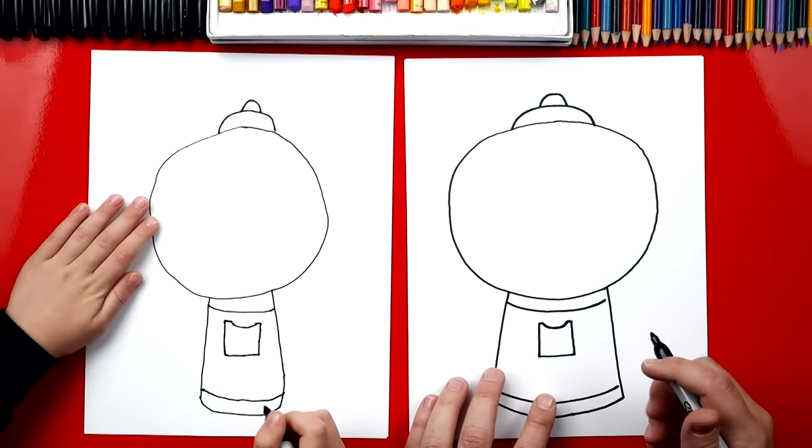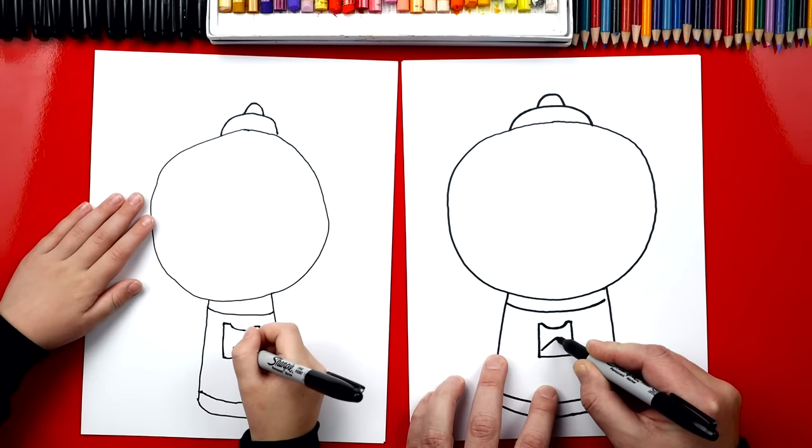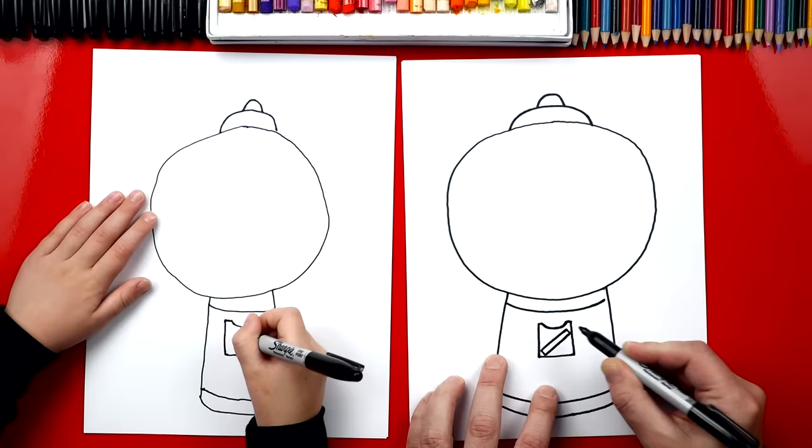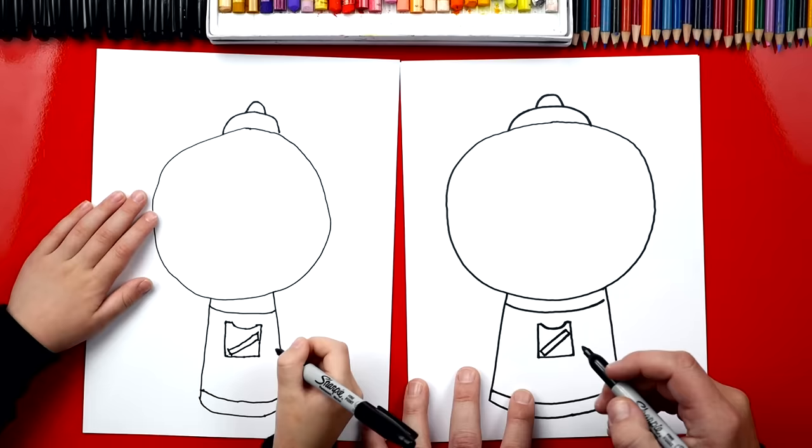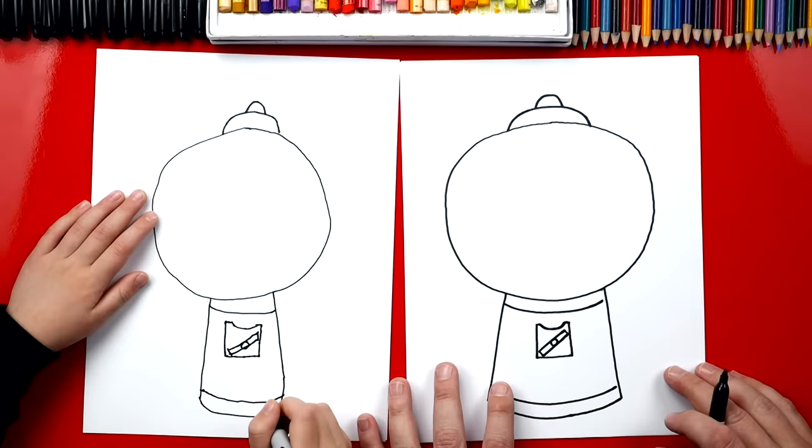Now we're going to draw the little thing that you turn so that you can get the gumball out of the machine. So we're going to draw a little rectangle right here, but we're going to draw two diagonal lines. So watch this. We're going to draw one, two, like that. And then on each side, we're going to connect them like that. So draw the two diagonal lines and then we'll connect them. One and then another one right below it. And then connect them. And then right in the middle, let's draw a little circle.